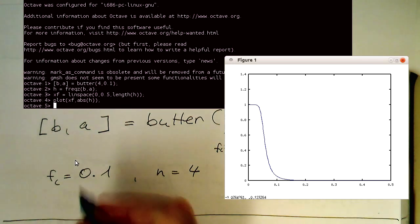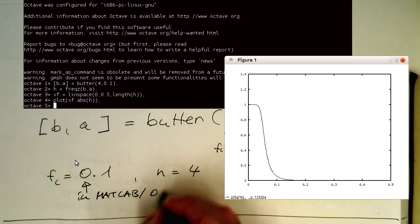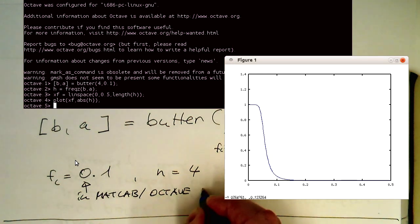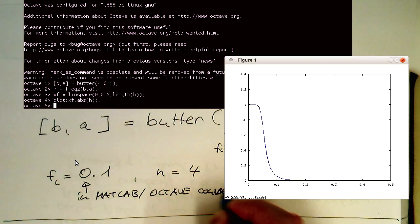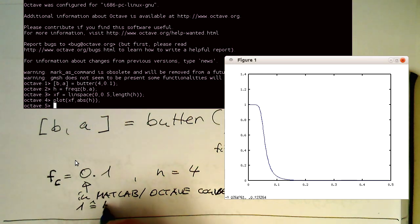So this FC here 0.1 is in MATLAB or Octave convention. So essentially this FC here is two times higher than the normalized frequencies we used before. So we need to be careful here.